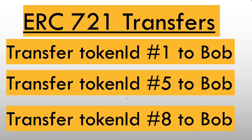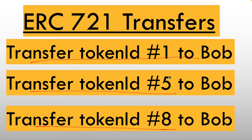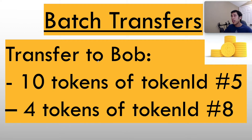ERC-1155 allows for more efficient transfers of tokens, which allows you to save more gas. To explain this, let's look at how tokens are transferred in ERC-721 — the standard only allows transferring one NFT at a time. For example, if you have tokens and want to transfer them all to Bob, this requires three separate transfers: token ID 1, then token ID 5, then token ID 8. Each separate transfer has its own gas fee. If you wanted to transfer 1,000 gold coins where each coin was an NFT, this would require 1,000 separate transfers. ERC-1155 introduces batch transfers, in which you can transfer multiple token types at a time, and for each token type you can transfer multiple instances.